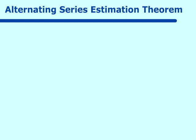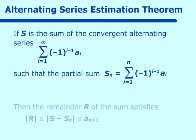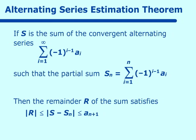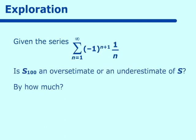Now for the alternating series estimation theorem. If you have a convergent alternating series and take a partial sum s sub n, then the remainder satisfies |s - s sub n| ≤ a sub n plus 1. This tells us how far away the partial sum is from the actual answer. Let's try a problem with the series (-1)^(n+1) times 1/n.